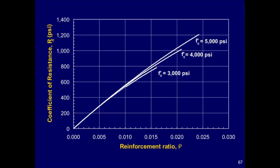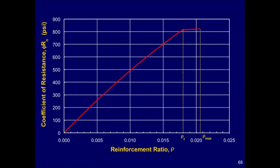This graph shows the relationship between rho and R sub n for grade 60 reinforcement and various values of f'c. The curves end at the point where the net tensile strain in the reinforcing steel reaches the upper limit of 0.004. This graph is for 4,000 psi concrete and grade 60 reinforcement. It shows the effect of the strength reduction factor phi on the design strength.